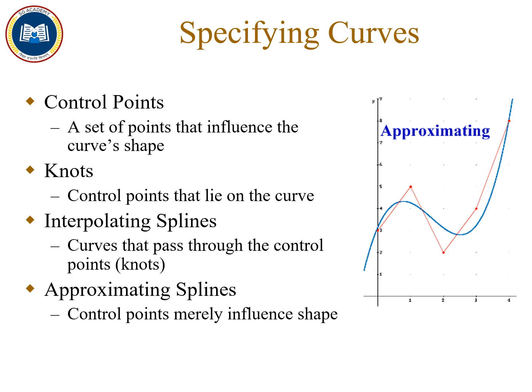Control points वो points कहलाते हैं जहाँ पर जिनकी वज़ह से हमारे curve की shape influence हो सकती है। अगर हम इस diagram की बात करें, तो ये छोटे-छोटे points जो हमने बना रखे हैं ये सारे हमारे control points कहलाते हैं। Knots वो points होते हैं जो कि curve पर lie करते हैं। जैसे ये जो red color में points हैं और जो red color का line इन points को join करता है — अगर ये कोई original curve है तो ऐसे points जो हमारे curve पर lie करें उनको हम knots बोलते हैं।